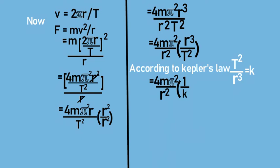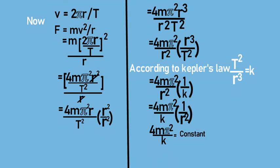Now, we need to postulate inverse square law of gravitation. So we replace r³/T² with 1/K from Kepler's law. That gives us 1/r² in the denominator. And 4mπ²/K is constant. Thus, force is inversely proportional to the square of the distance.